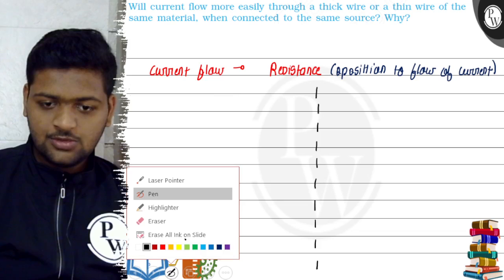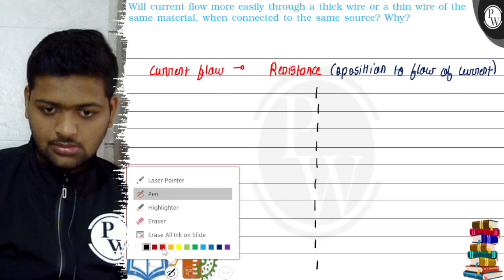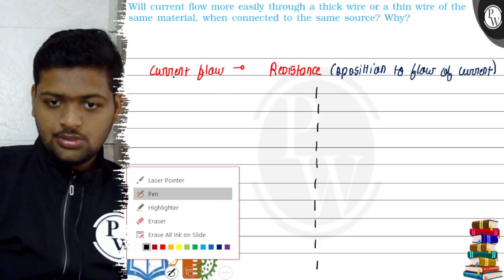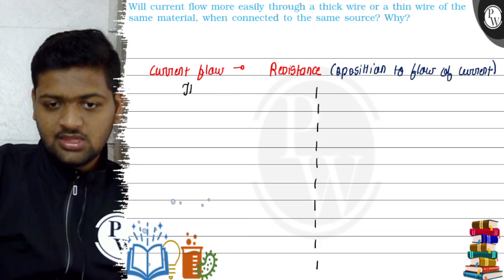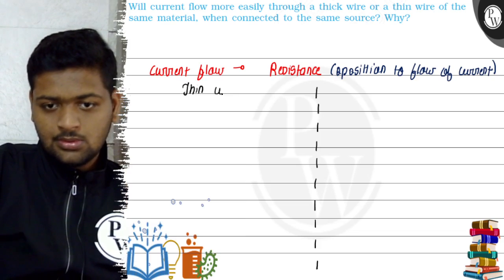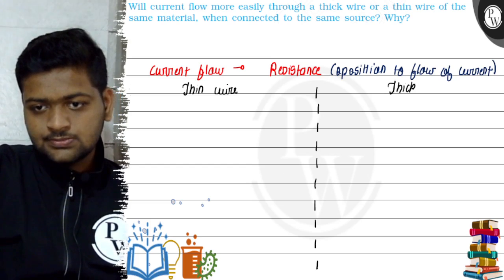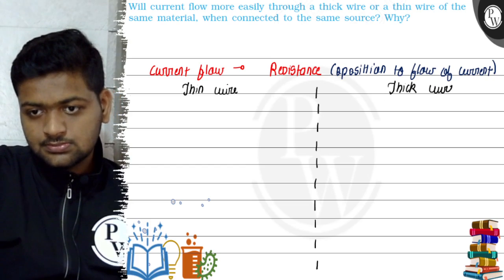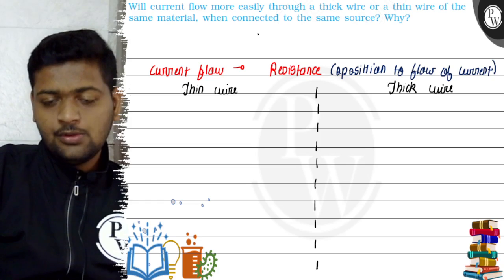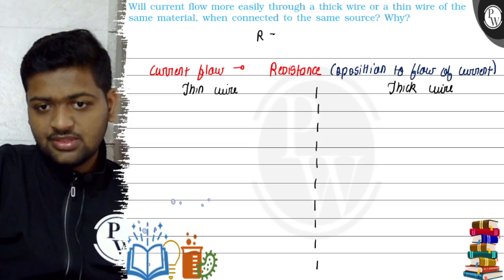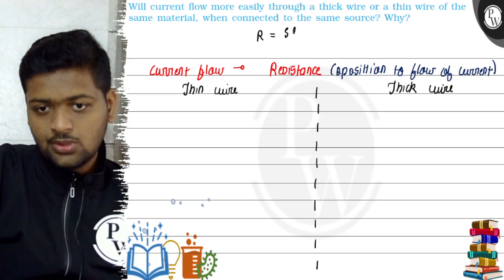So now we will do this question. Here will be our thin wire and here will be our thick wire. And we all know a basic formula of resistance that is R is equal to ρL by A.